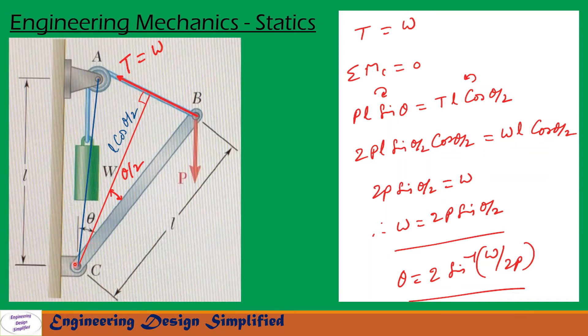Now let us draw a line perpendicular to this line AB from C. So since this total angle is theta, then this half angle will become theta by 2. So the length of this perpendicular line will be L cos theta by 2.